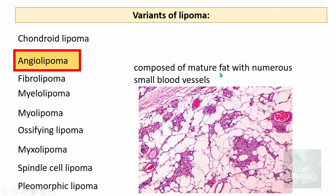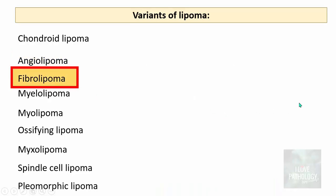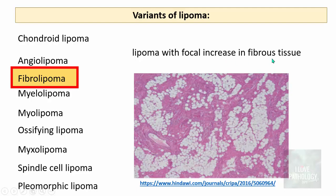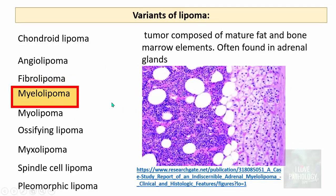Fibrolipoma is a lipoma with a focal increase in fibrous tissue with spindle-shaped cells. Myolipoma is a tumor composed of mature fat and bone marrow elements intermingled with mature fat; these are often found in adrenal glands.